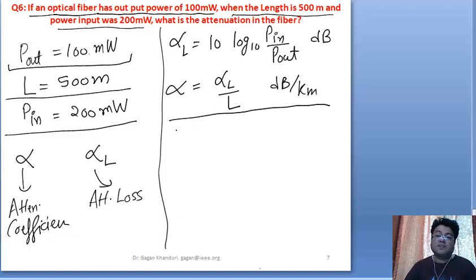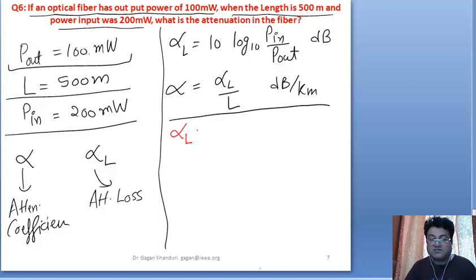Let's change the color and do this numerical. I'm going to find alpha_L first, that is attenuation loss. It's going to be 10 log base 10, P_in is 200, P_out is 100.